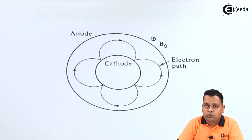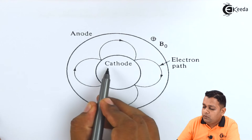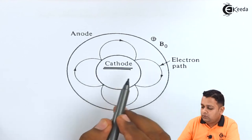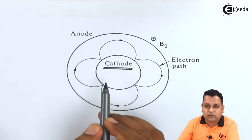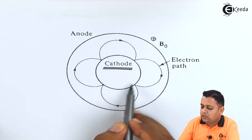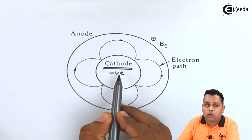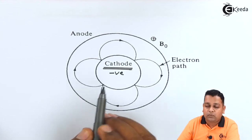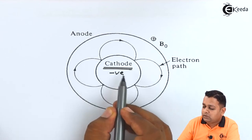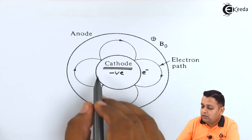In any microwave tube, there are two electrodes very important to us: cathode and anode. In this diagram, we have the cathode terminal. As this is the cross-sectional diagram, the cross-section of the cathode is having a circular shape. The cathode is always provided a negative potential with heating elements so that free electrons will be generated onto the surface of this cathode.